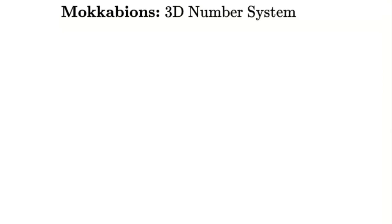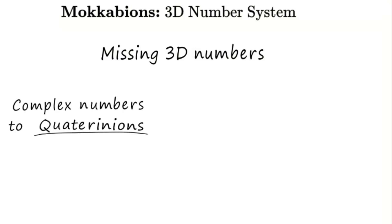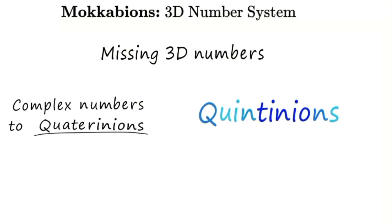What if a missing 3D number system could change the way we understand mathematics? A system that William Rowan Hamilton overlooked when he skipped directly from complex numbers to quaternions. This missing algebra isn't just a curiosity — it might unlock higher dimensional number systems, including a five-dimensional extension we call quintinions. But before we reach 5D, we must first reconstruct what should have existed in 3D.